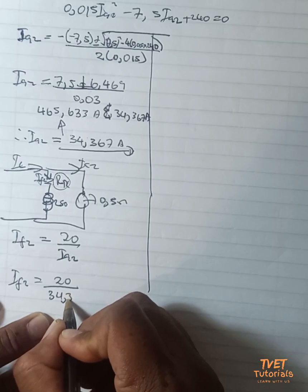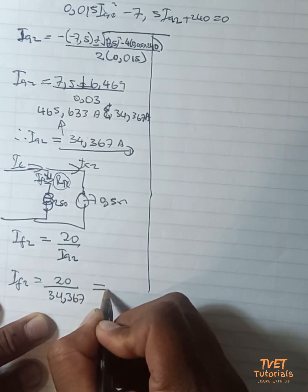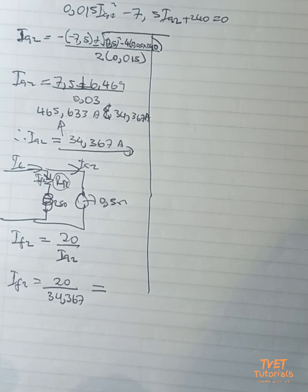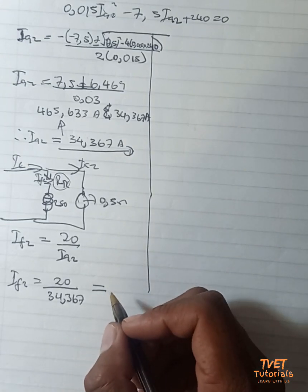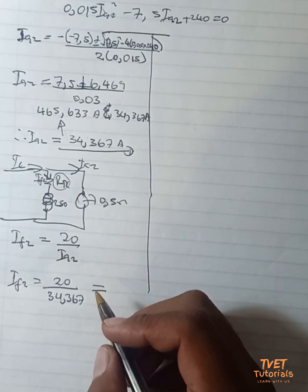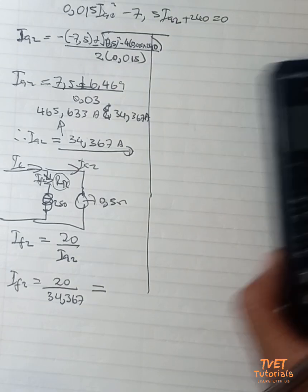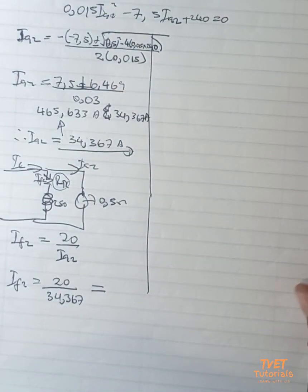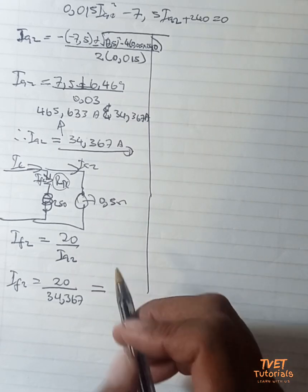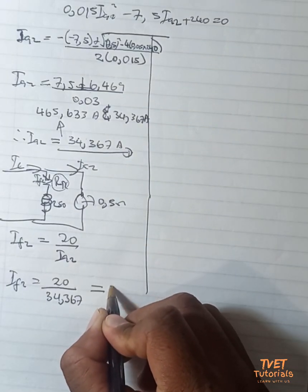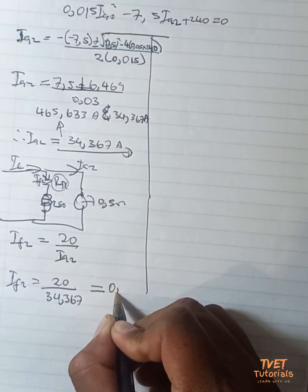that value of I, that value there, 4.367. It then equals - let's punch that in the calculator - I_field2 is equal to 0.582 amperes.